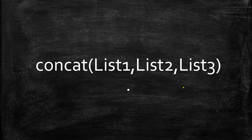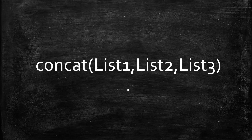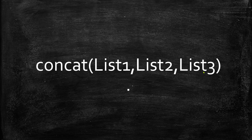So basically what we are trying to achieve here is we will create a new predicate called concat. We will be passing three different lists: list one, list two, and list three. Our purpose is to create a concatenation of list one and list two into list three. So if I provide two lists ABC and DEF, with ABC as list one and DEF as list two, and pass a variable as list three, then list three will have the whole list ABC comma DEF.